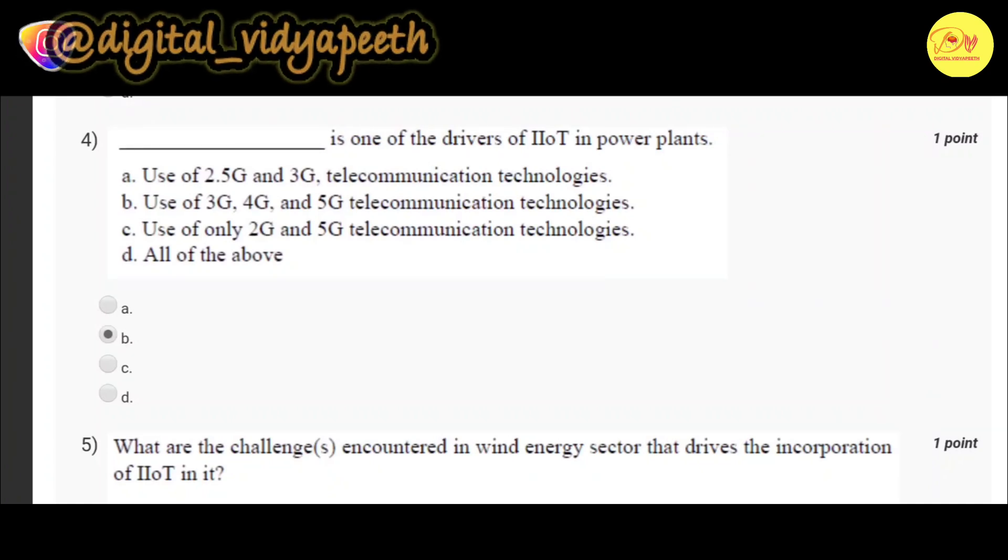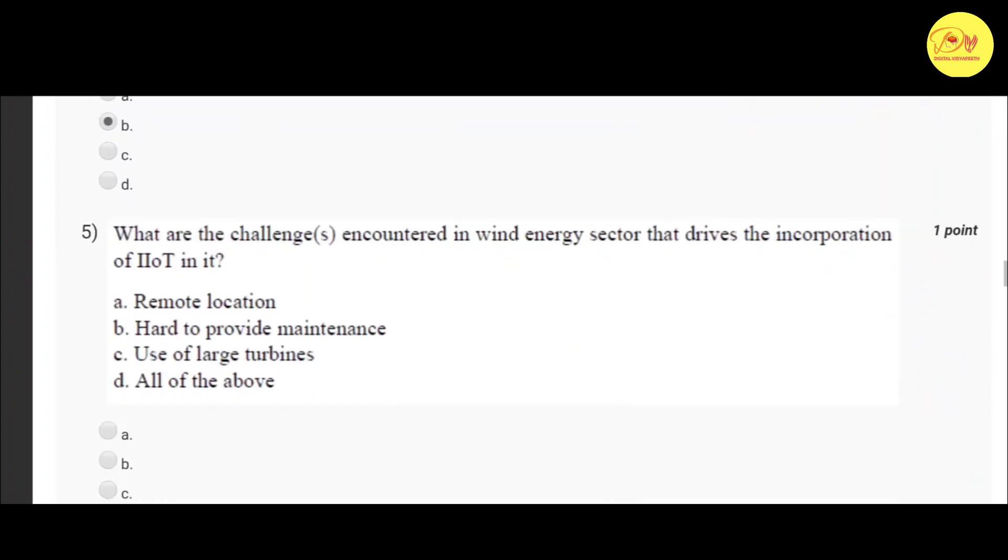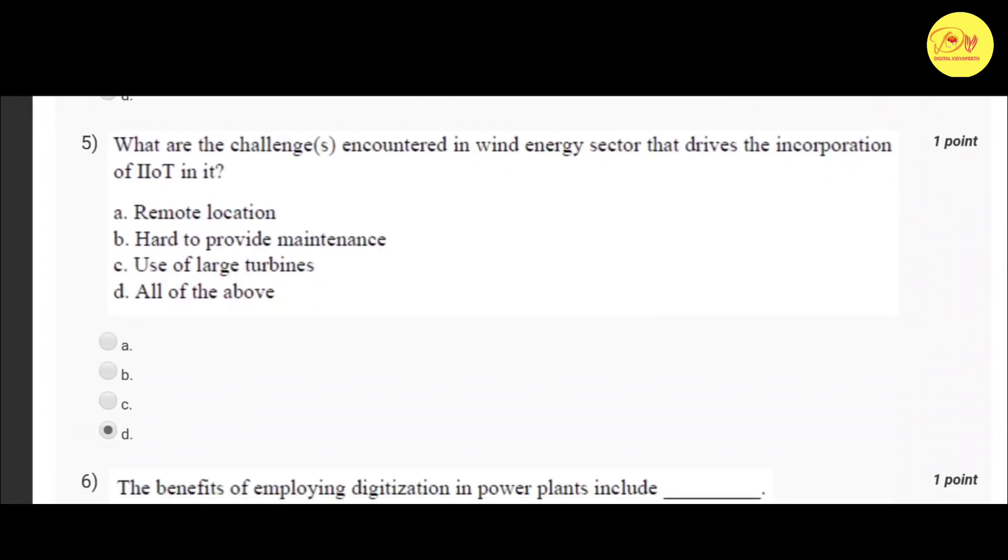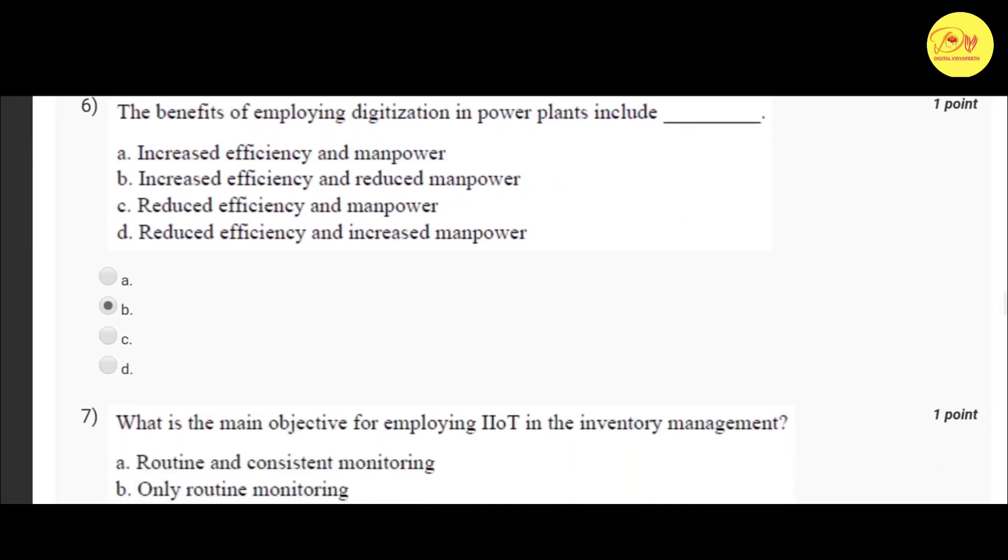Our fifth question is: What are the challenge or challenges encountered in wind energy sector that drives the incorporation of IIoT in it? Correct option is D, all of the above - remote location, hard to provide maintenance, use of large turbines. Our sixth question is: The benefits of employing digitization in power plants include? Correct option is B, increased efficiency and reduced manpower.